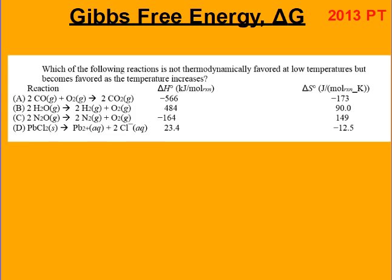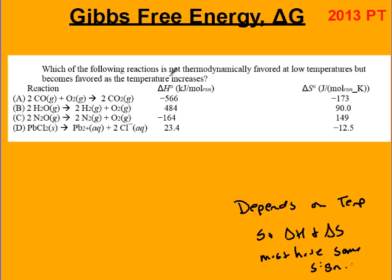Try this problem. The reaction is not favorable at low temperatures but is favored as the temperature increases, which means it depends on temperature — so H and S must have the same sign. Because it is not favorable at low temperatures but favorable as temperature increases, H and S must both be positive. Looking at the answer choices, B is the only one that has a positive H and S.